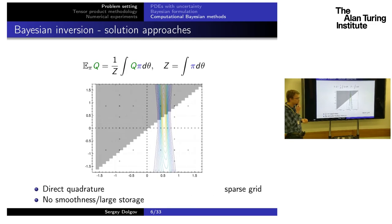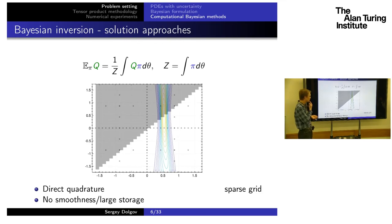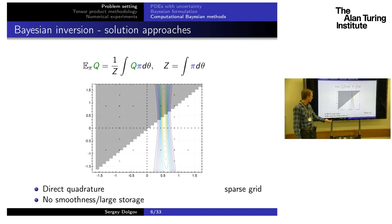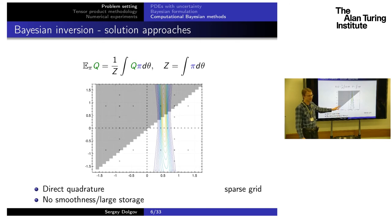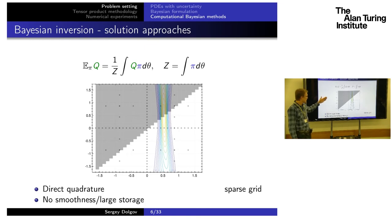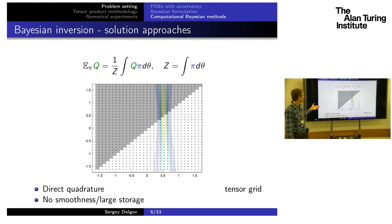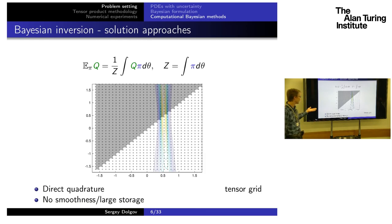We can try more rapidly convergent quadratures, something like sparse grids. But we still have an argument that many points are wasted. Furthermore, we don't have smoothness — this product function is not smooth, not even continuous. So it's probably not a good idea to use techniques which explicitly employ smoothness. We can try to introduce a tensor product grid, but then face the curse of dimensionality, and it's still a question how rapidly they will converge.